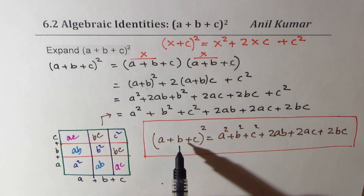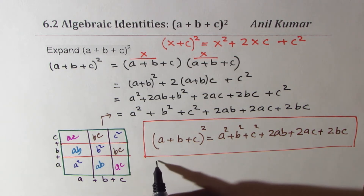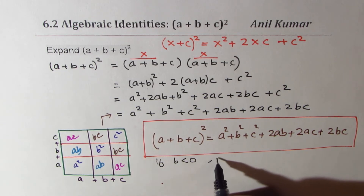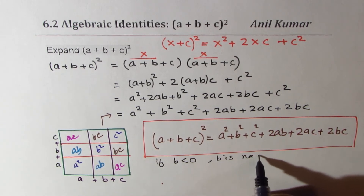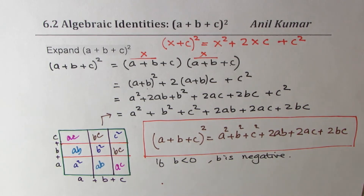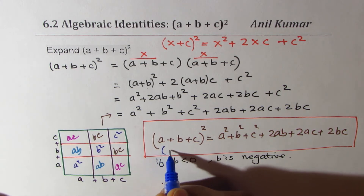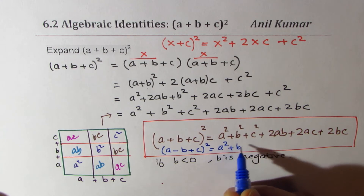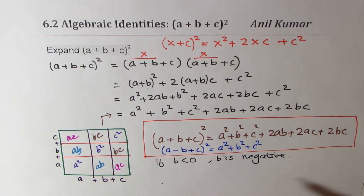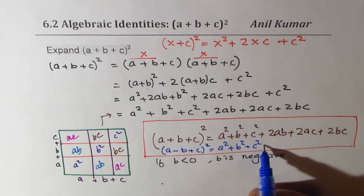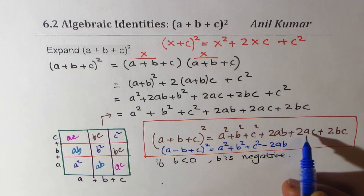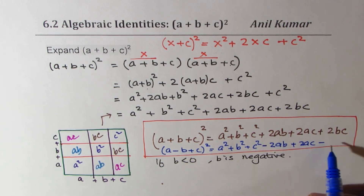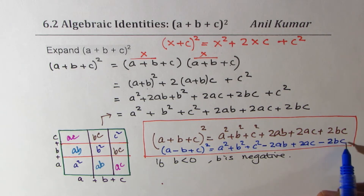Now we could also take negative numbers. If b is negative, then the terms involving b will be negative. For example, with (a-b+c)², the square terms remain positive — since the square of a negative is positive — but 2ab becomes −2ab. The ac term stays positive since a and c are positive, but the bc term becomes negative.